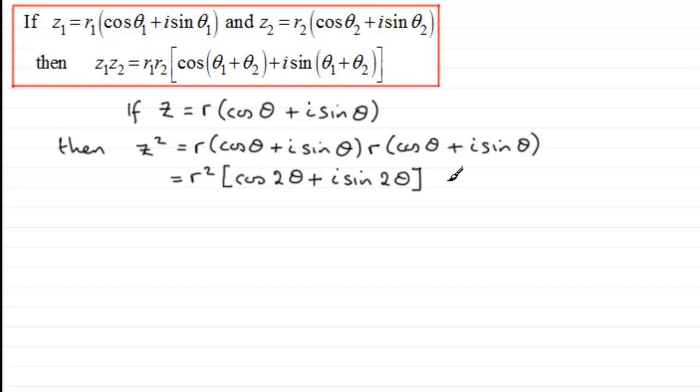Now what happens if we extend it again and we look at Z³? If we were to look at Z³, think of this as Z² times Z. Well we've already got Z². Z² was R²(cos 2θ + i sin 2θ).